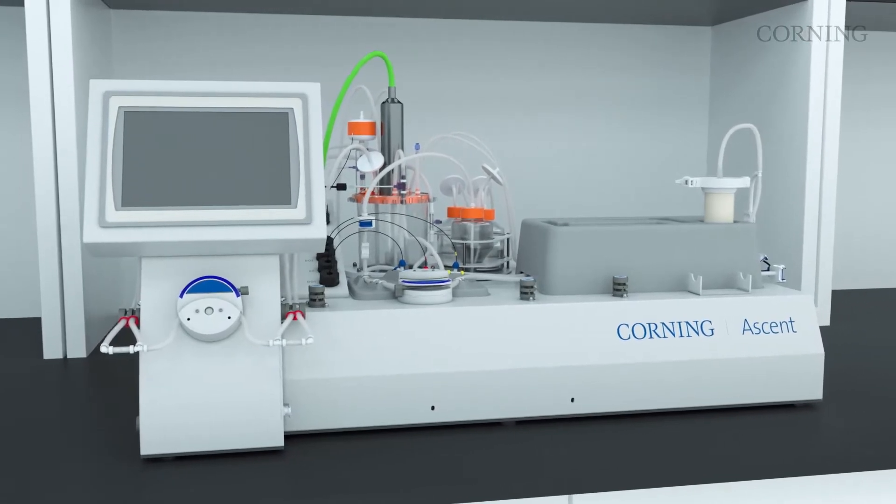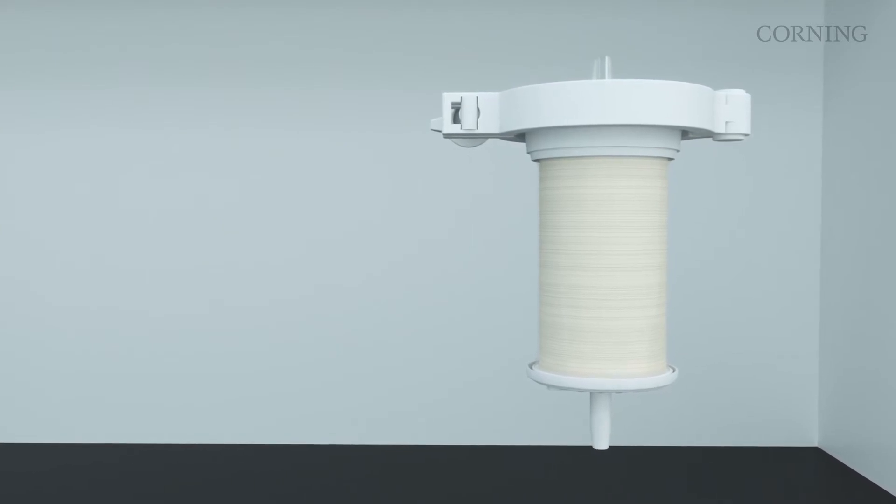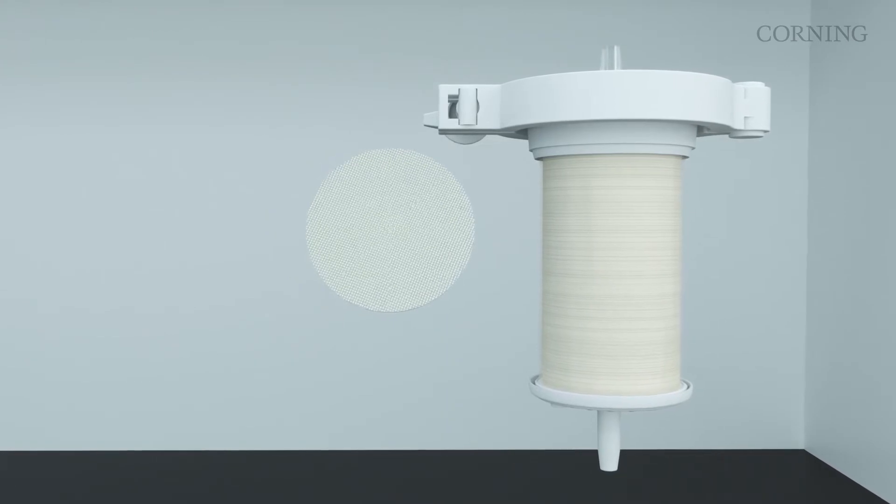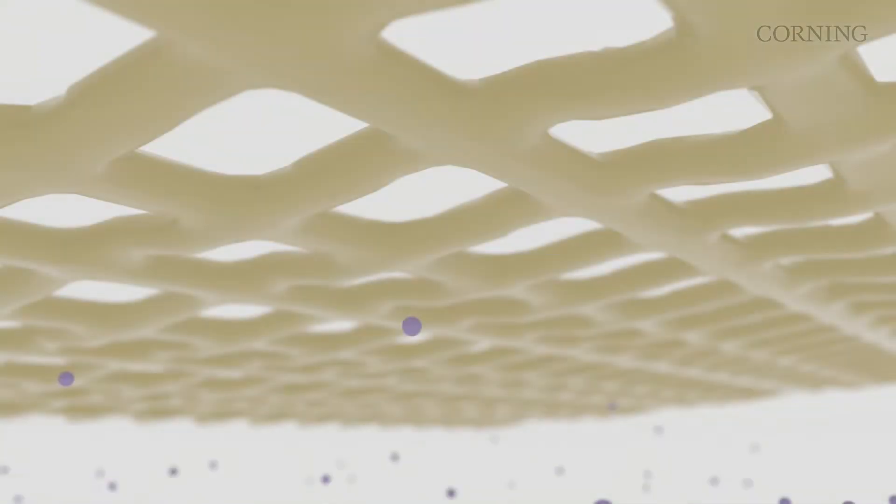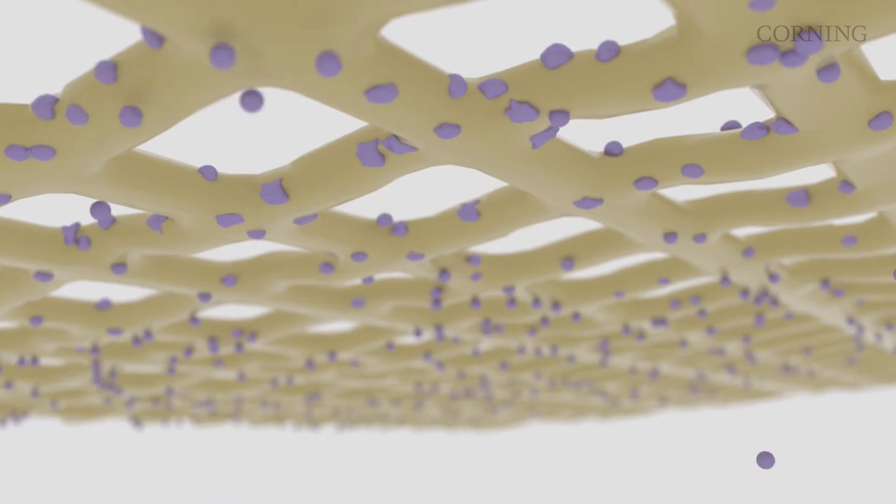The bioreactor vessel is designed for optimal fluid dynamics, providing efficient nutrient delivery and waste removal. Its specially treated woven polymer mesh substrate is designed to maximize cell growth throughout the bioreactor bed with consistent media exposure.